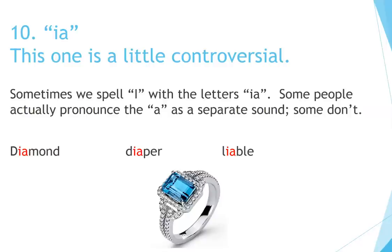Number 10: I-A. This one is a little controversial. Sometimes you spell I with the letters I-A. Some people actually pronounce the A as a separate sound, some don't. For example: diamond, diaper, libel — or liable.